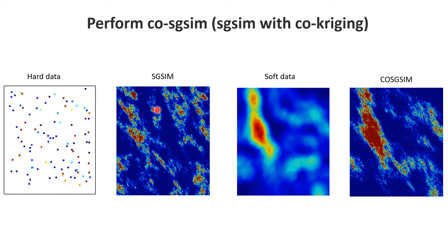Once I have that, I can do co-SGSIM under Markov model 2. I have hard data — this was my SGSIM — now I have hard data and soft data. The soft data is the secondary data and the hard data is the primary data. As you notice, the mountain ridge is much more nicely reproduced in co-SGSIM due to the effect of the secondary data.